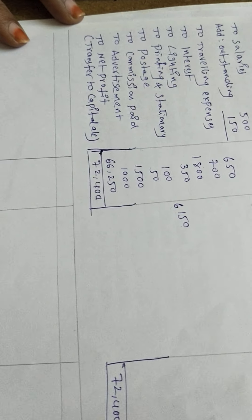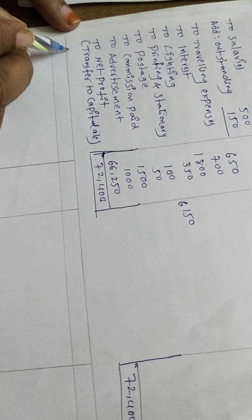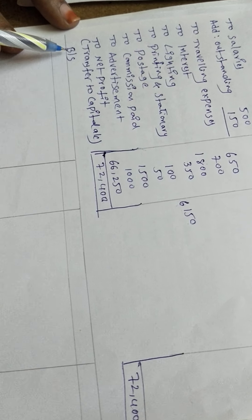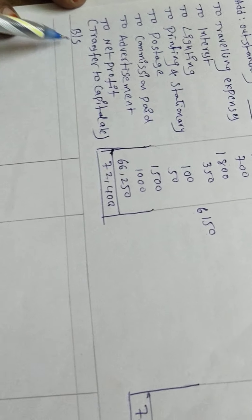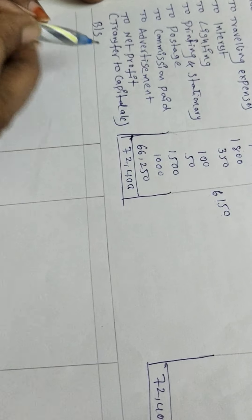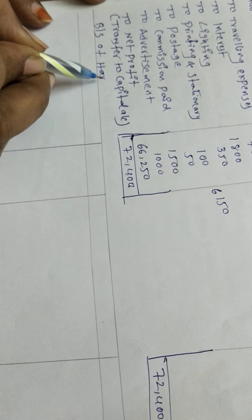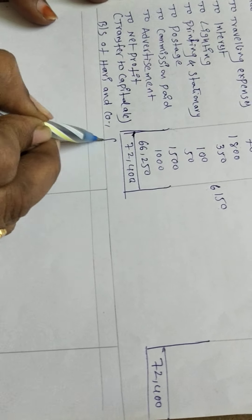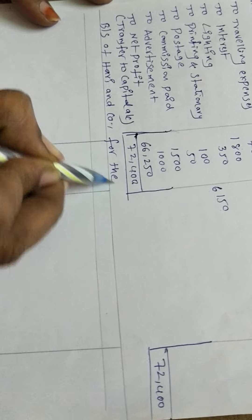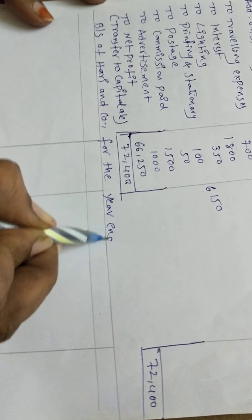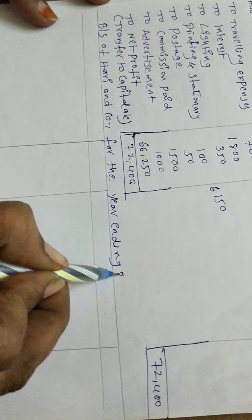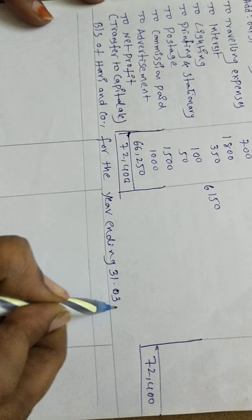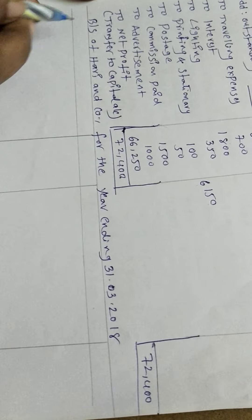Trading and profit and loss account is over. Next is the balance sheet. Balance sheet of Hari and Company for the year ending 31st March 2018. This is not an account, so we do not write DR or CR — left-hand side is 'Liabilities', right-hand side is 'Assets'.